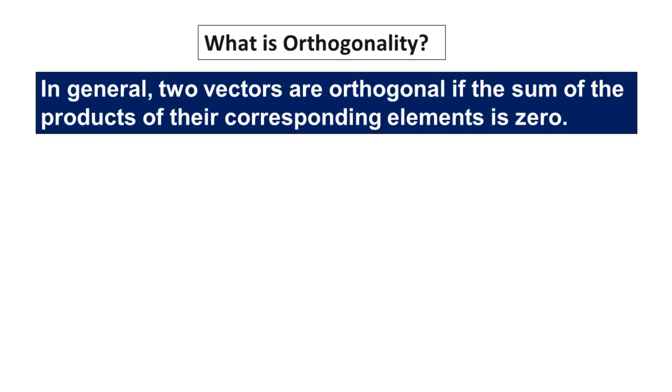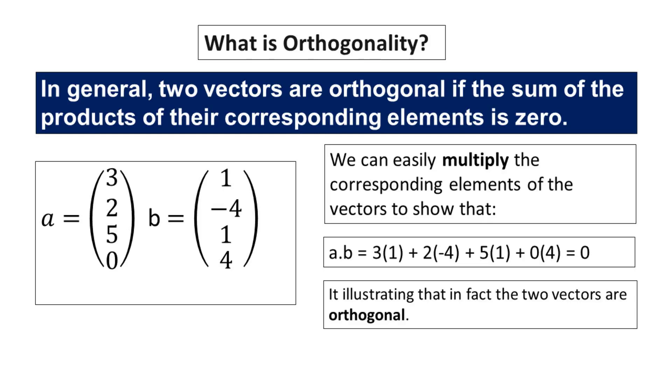In general, two vectors are orthogonal if the sum of the products of their corresponding elements is zero. This might sound like a mouthful, but let me put it into perspective for you. We are all familiar with the concept of multiplication, but have you ever considered the significance of multiplying corresponding elements of vectors? It is a powerful way to demonstrate the relationship between these mathematical entities. In this case, we can easily multiply the corresponding elements of the vectors to show that the product is zero, illustrating that in fact the two vectors are orthogonal.